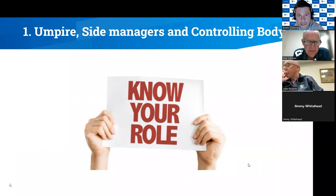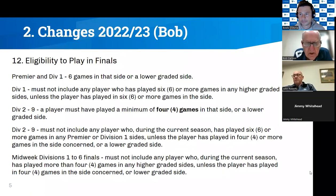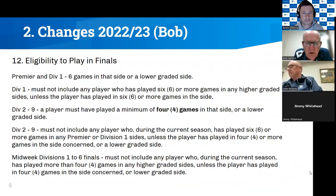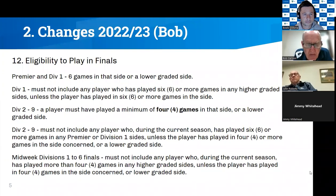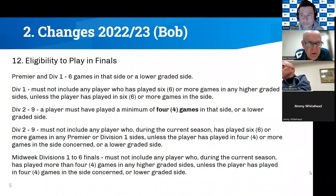Moving on to changes for this season. In relation to Premier Division and Division One, the number of games required to qualify for finals has been reduced from eight games to six games. Also for Division One, the number of games played in a higher grade — Premier Division — has also been reduced from eight to six games, enabling a player who has played six games in Premier Division to also be eligible to play in Division One finals.